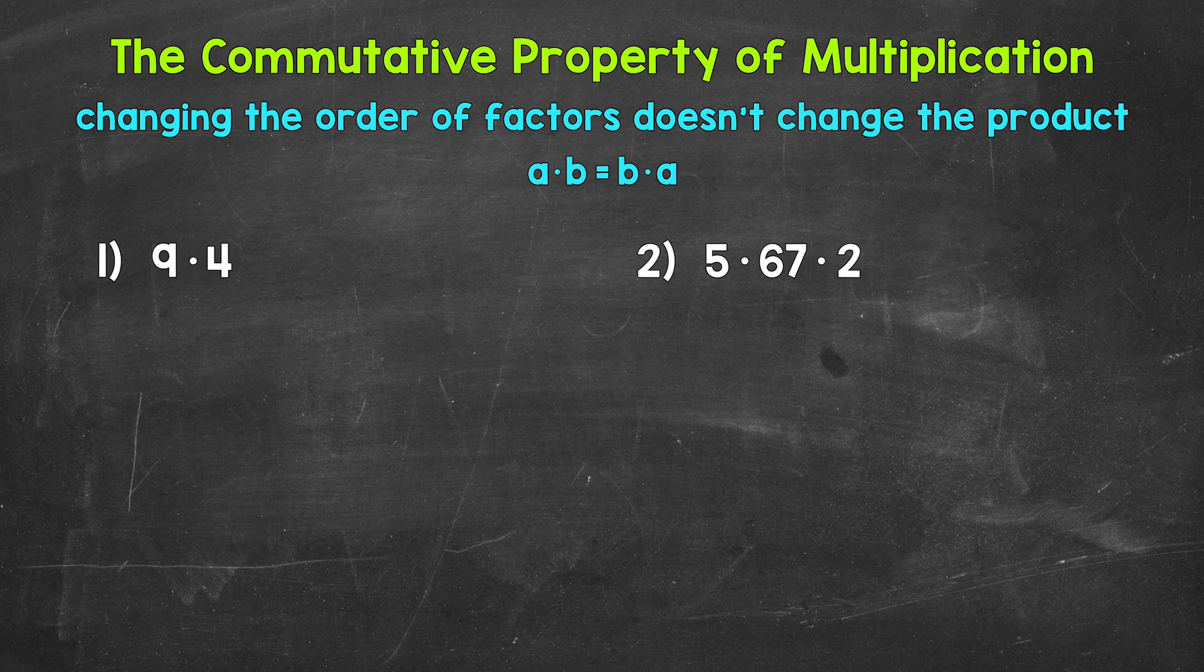Now the commutative property of multiplication states that changing the order of factors doesn't change the product. Factors are the numbers being multiplied together, and then the product is the answer to a multiplication problem.